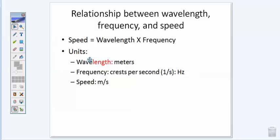When you hear the word wavelength — because it's a length — it's usually measured in meters, so we're going to use meters for that. Frequency is defined as crests per second, or waves per second, which is one over second. That is denoted by the Hertz — capital H, lowercase z. So when you take the wavelength in meters times one over seconds, you get meters per second, which is our unit for speed.